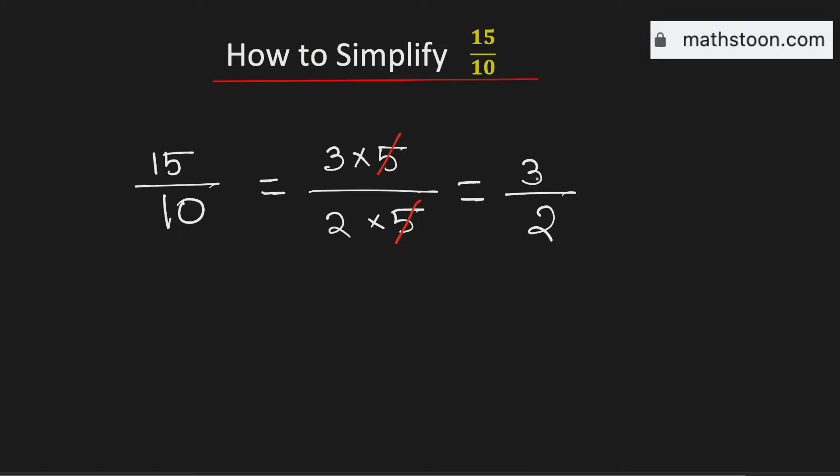Now both 2 and 3 are prime numbers, so this fraction cannot be simplified further. As the numerator 3 is greater than the denominator 2, this is an improper fraction. So we will write it as a mixed number.